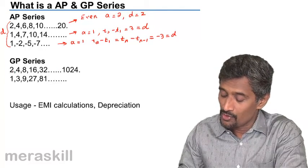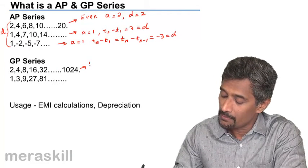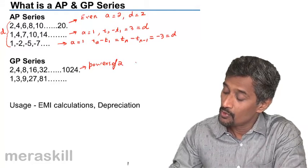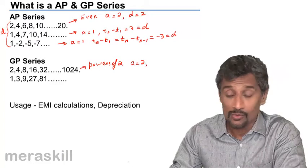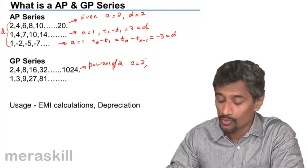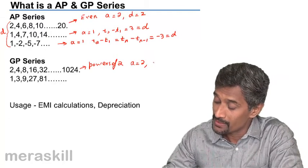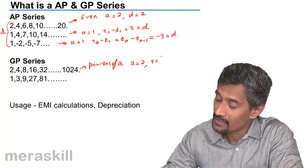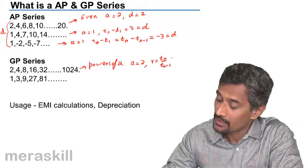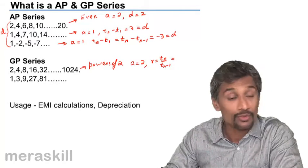For GP series, you have all these as powers of 2. The first term is 2, second term is 2 times 2 squared, third term is 2 times 2 cubed, and so on. So r is nothing but tn upon tn minus 1.